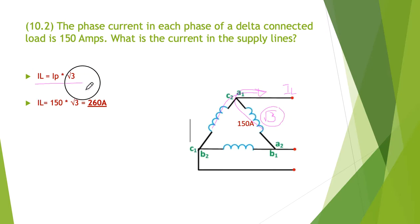So as these currents combine back out through here, there's a root three relationship. So we know that I line is equal to I phi multiplied by root three. So in this particular case, we're going to have 150 times root three, telling us that we have an I line of 260 amps.